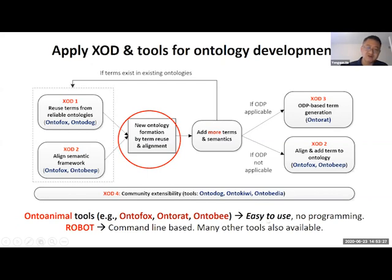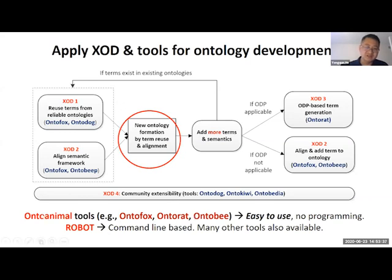These tools are quite easy to use if you have background in ontology—you can quickly catch up. There are also options that don't require a web browser, like the ROBOT command-line tool written in Java.